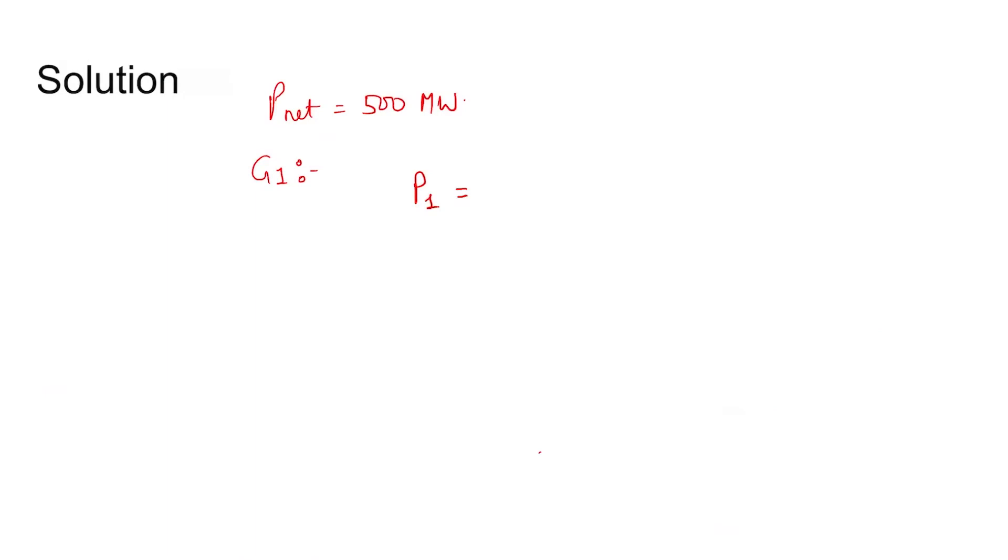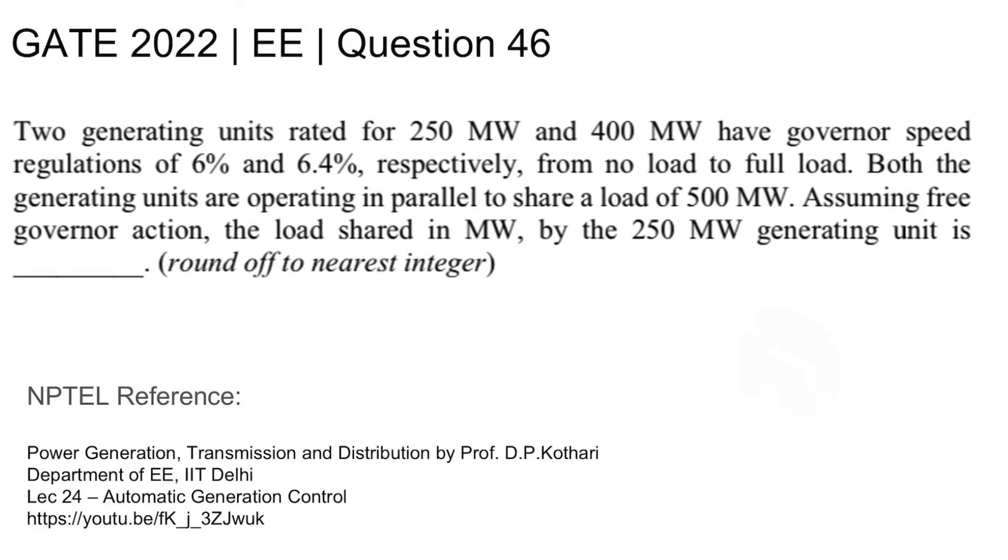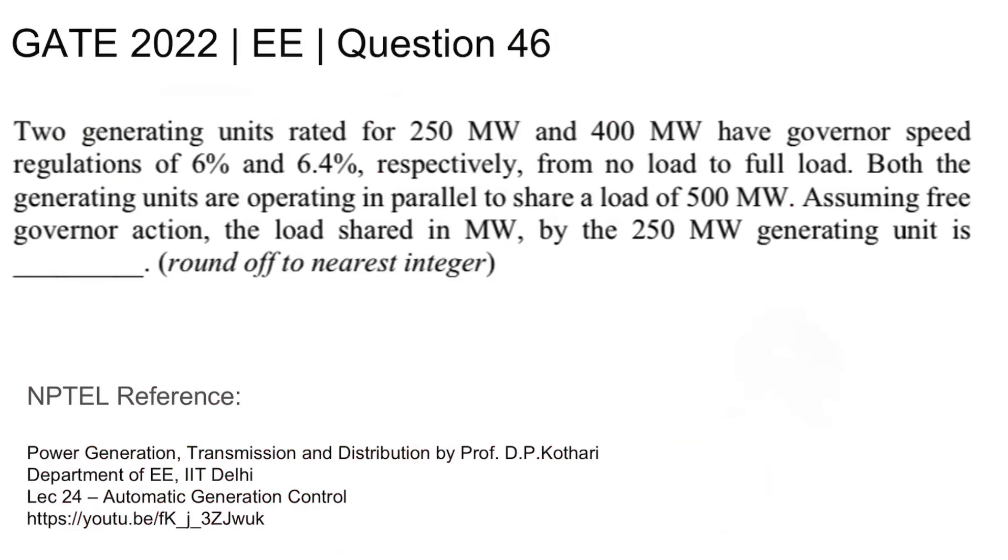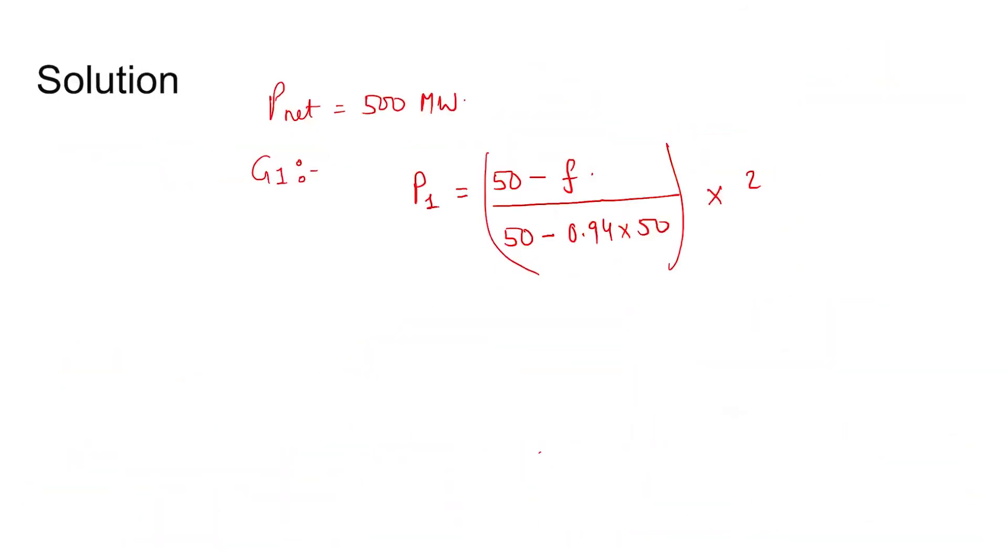The power generated by one equal to no load frequency, which is given in the question, no load frequency which is 50 hertz let us assume, minus operating frequency divided by no load minus full load frequency. Six percent drop we see, so 0.94 times 50, because six percent has been reduced. So this times the full load capacity of the generator one which is 250.